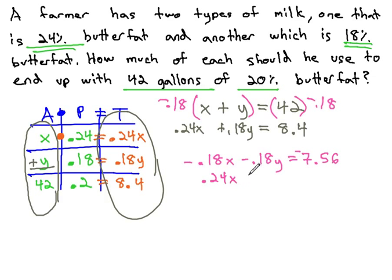The second equation is still 0.24x plus 0.18y equals 8.4.